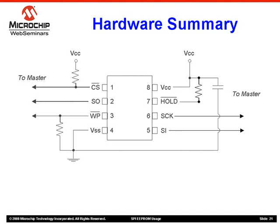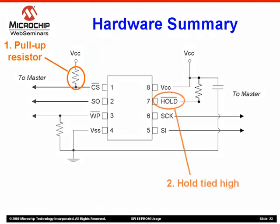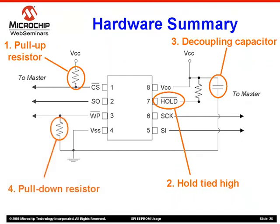Let's review those hardware recommendations now. First, there is a pull-up resistor on the chip select pin. Second, the hold pin is either connected to the master or, more commonly, hold is disabled by being tied high. Third, a decoupling capacitor is utilized. Finally, the WriteProtect pin is either disabled by being pulled high to VCC, or is connected to the master via a pull-down resistor. Now let's move on to a discussion of the status register.